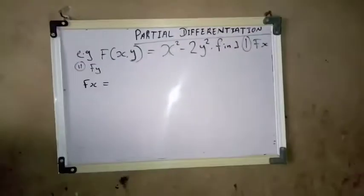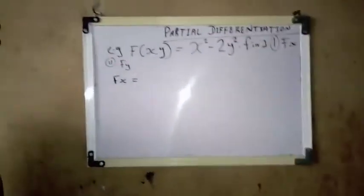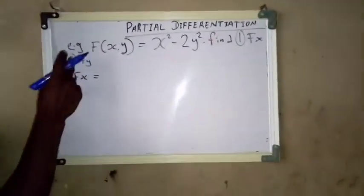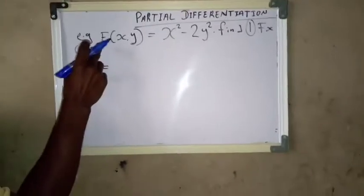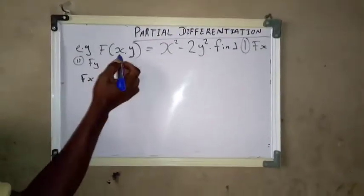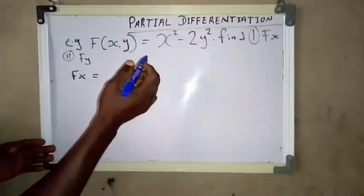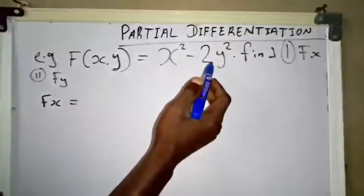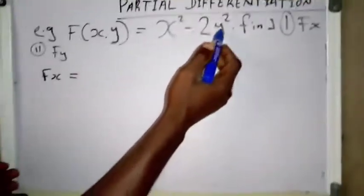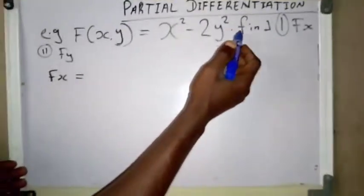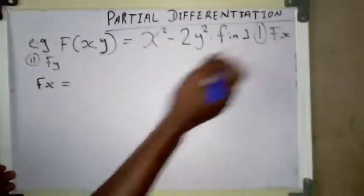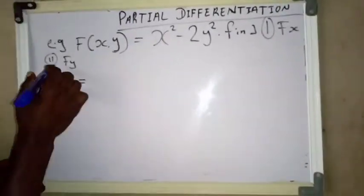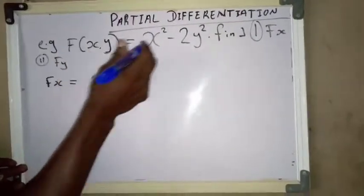Partial differentiation. Example 1: f(x, y) = x squared minus 2y squared. Find f_x and f_y.